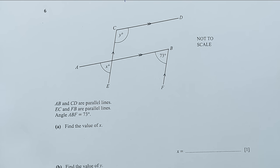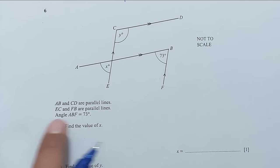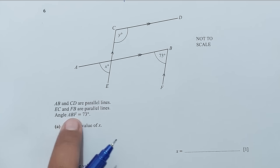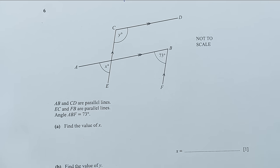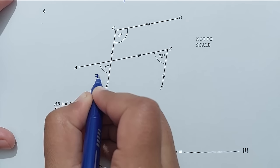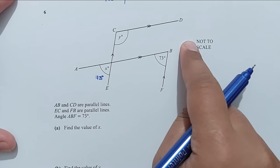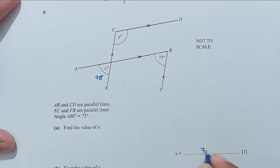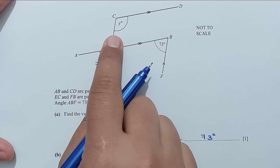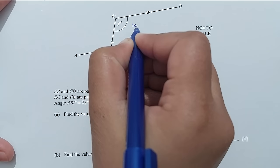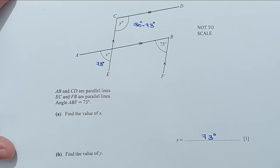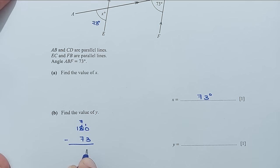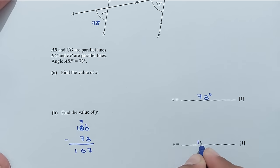Question number 6: AB and CD are parallel lines, and EC and FB are parallel lines. Angle ABF is 73 degrees. For part A, find X: X is also 73 degrees because these are corresponding angles on parallel lines, and corresponding angles are equal. For part B, find Y: the straight line is 180 degrees, so 180 take away 73 gives 107 degrees for Y.